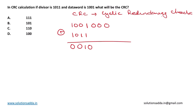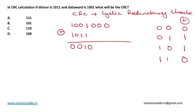For those who don't know the XOR operation: the inputs and outputs are — 0 XOR 0 is 0, 0 XOR 1 is 1, 1 XOR 0 is 1, and 1 XOR 1 is 0.